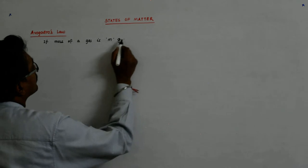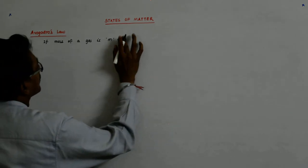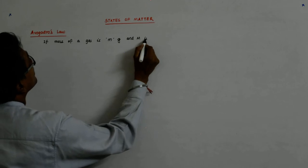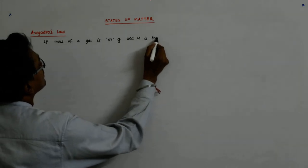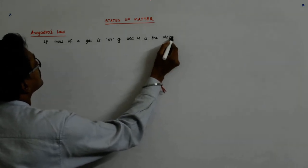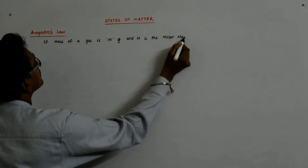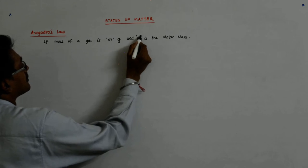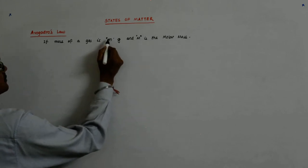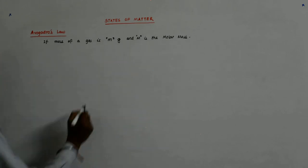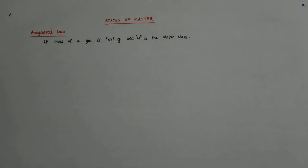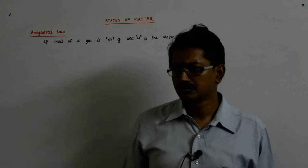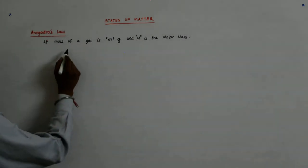And m is equal to, and m is the molar mass. So m is the molar mass. So how do I calculate the number of moles? It is m upon M.